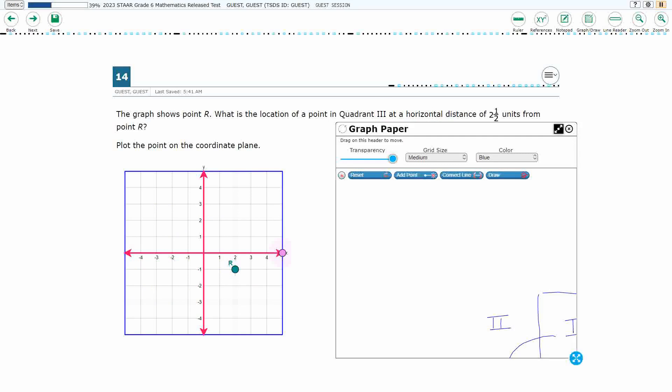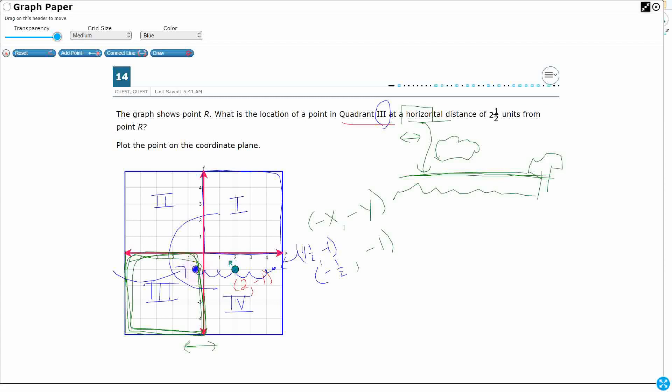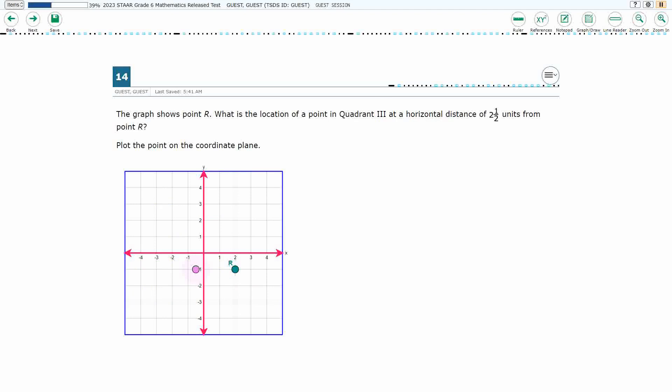So let's do that. Negative 1⁄2, negative 1, and there we go. It's 2 1⁄2 units from point R. It is in quadrant 3, and that's it. There's nothing else to push. That is my answer.